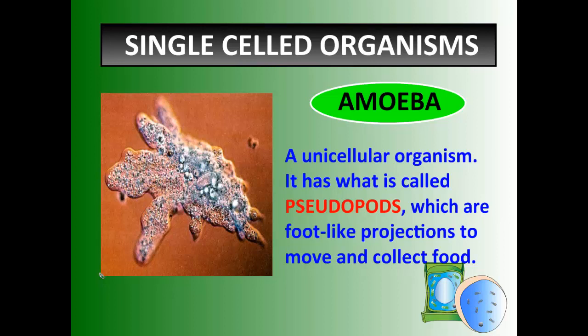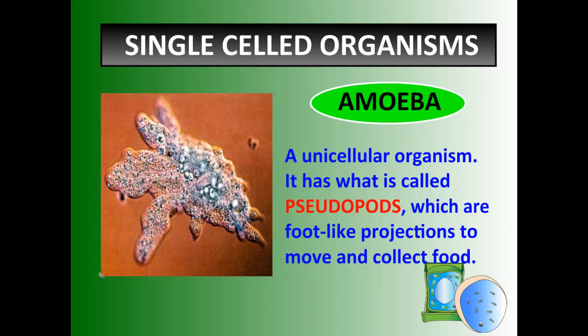Here's an example of a unicellular organism — this is called an amoeba. An amoeba has what's called pseudopods, which are these foot-like projections here. The way this amoeba works is it kind of blobs in one direction and allows itself to move, using these foot-like projections to move in one direction or another or to collect food.